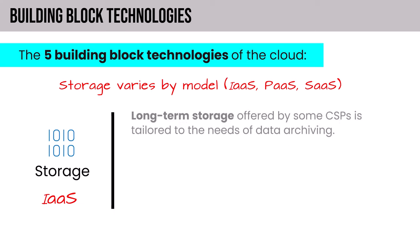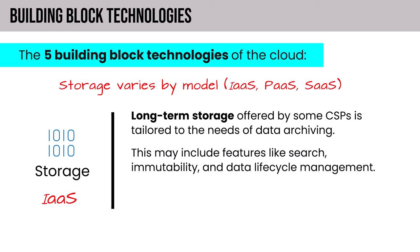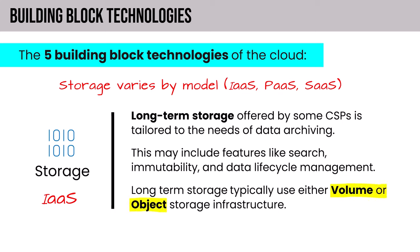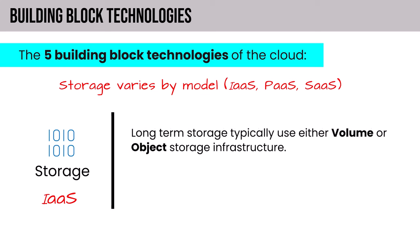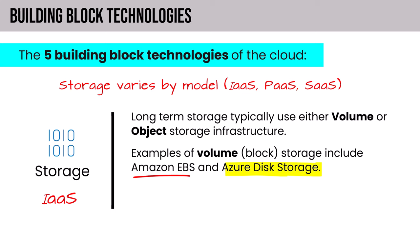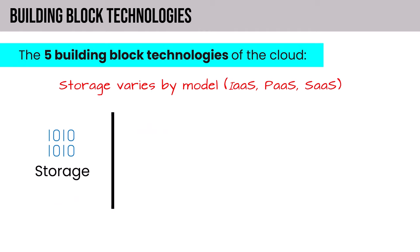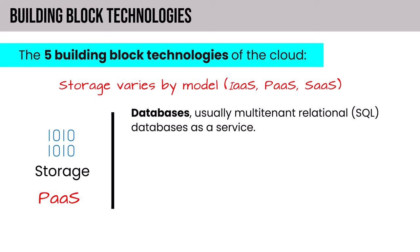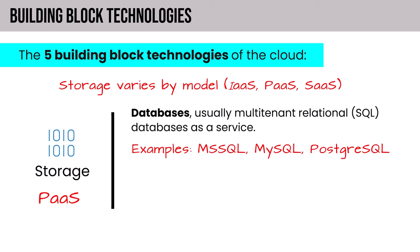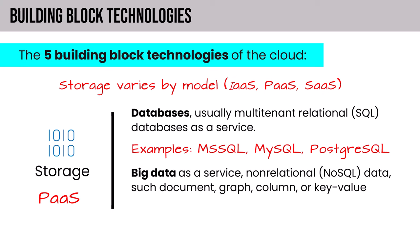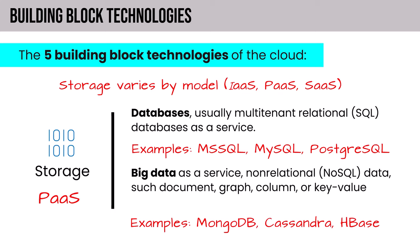Examples of block storage include Amazon EBS and Azure Disk Storage; examples of object storage include Amazon S3 and Azure Blob Storage. In the PaaS context, storage focuses on databases — usually multi-tenant relational SQL databases such as Microsoft SQL, MySQL, or PostgreSQL. There's also Big Data as a Service: non-relational or NoSQL data repositories like document, graph, column, or key-value stores, with examples including MongoDB, Cassandra, and HBase.